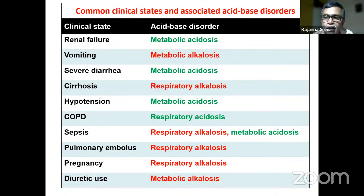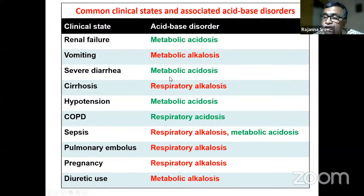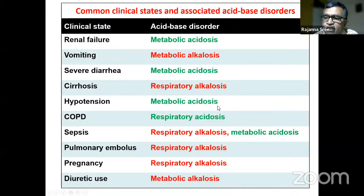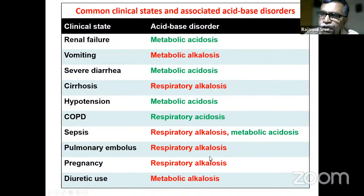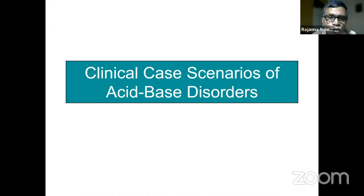Common acid-base scenarios: renal failure causes metabolic acidosis; vomiting causes metabolic alkalosis; diarrhea causes metabolic acidosis from loss of bicarbonate in stool; cirrhosis causes respiratory alkalosis; hypotension causes lactic acidosis (metabolic acidosis); COPD causes respiratory acidosis; sepsis can cause both respiratory alkalosis from brain stimulation and metabolic acidosis from lactic acid; pulmonary embolism and pregnancy cause respiratory alkalosis; diuretic use and volume depletion cause metabolic alkalosis.